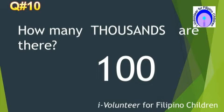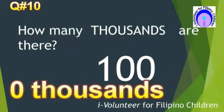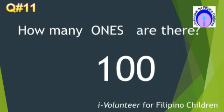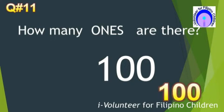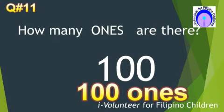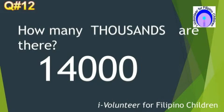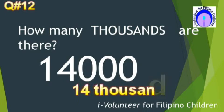Number 10. How many ones are there? Zero thousands. Number 11. How many ones are there? There are 100 ones. Question number 12. How many thousands are there? The answer is 14 thousands.